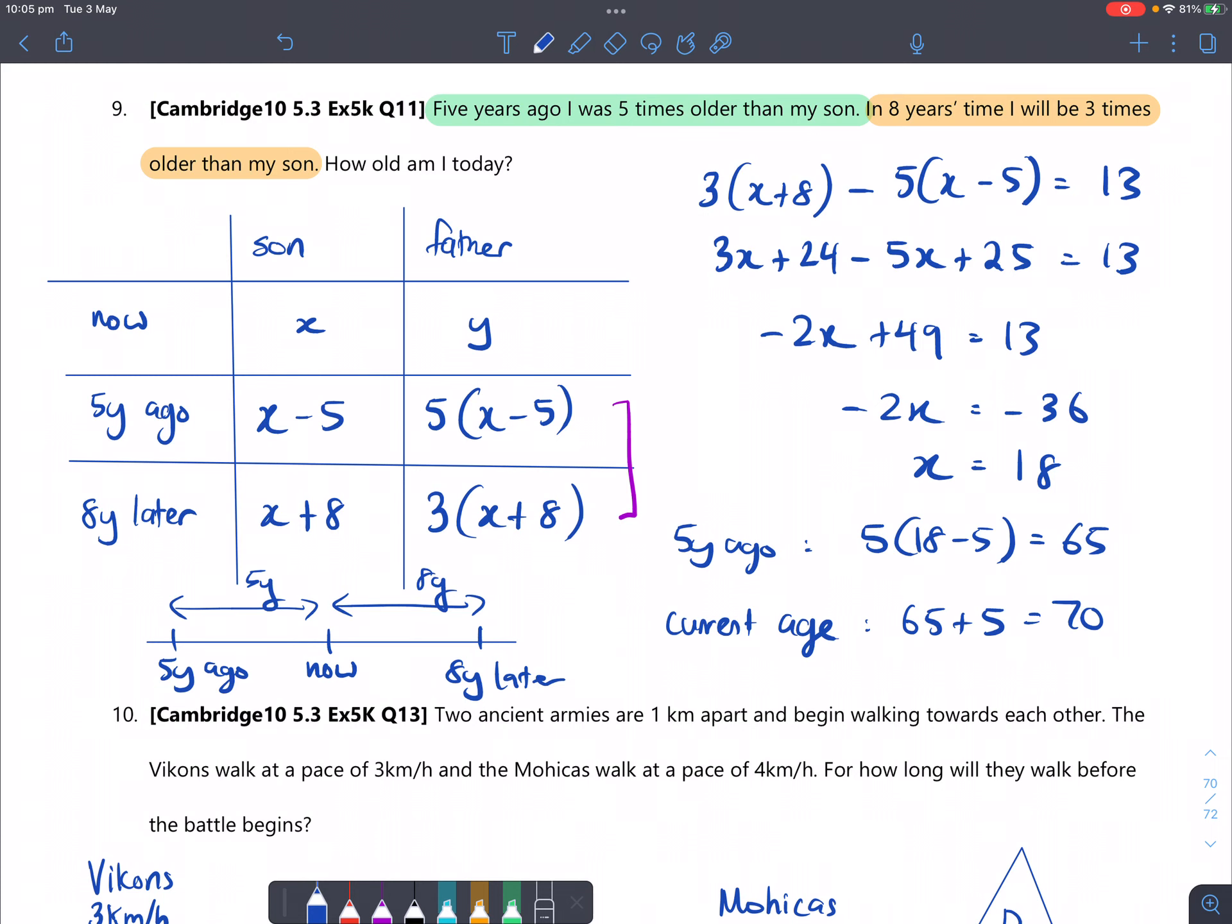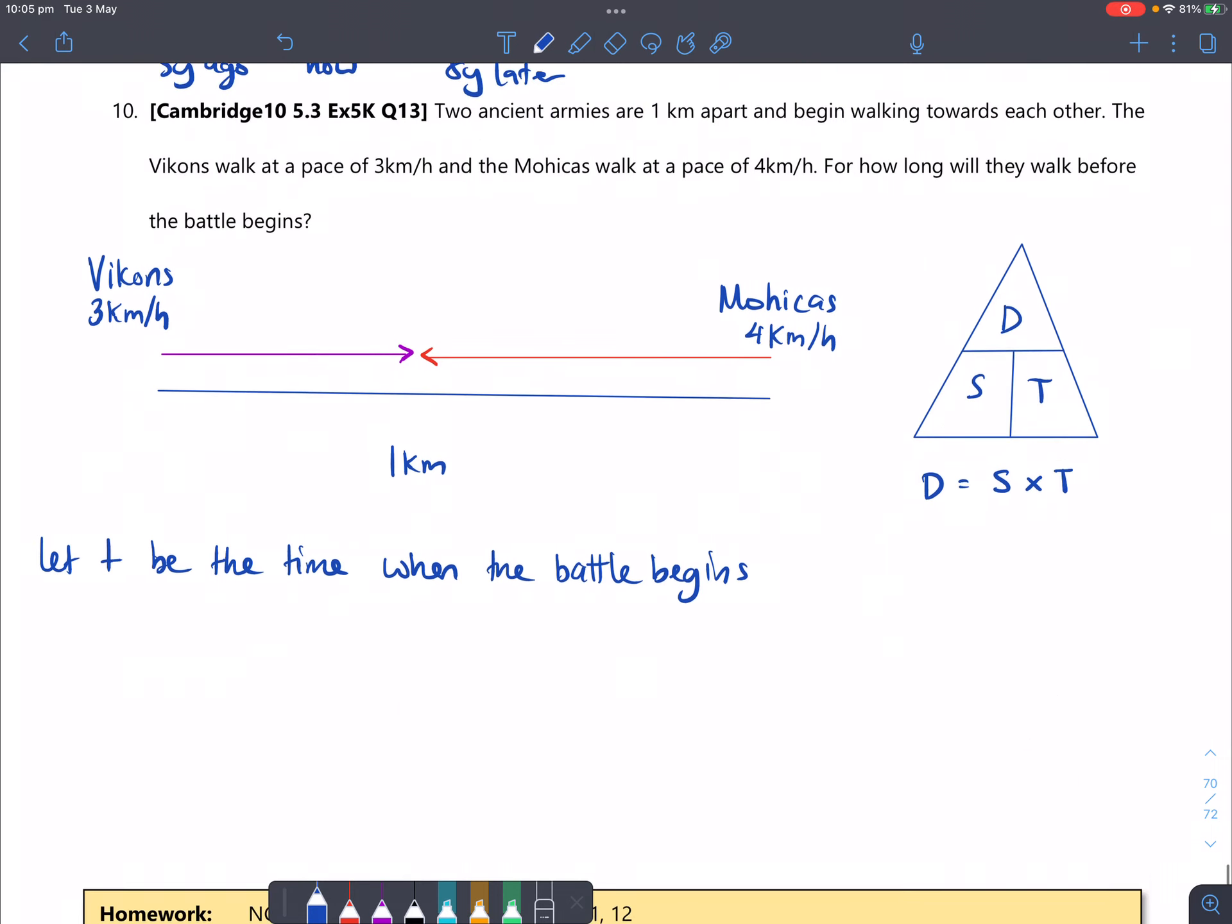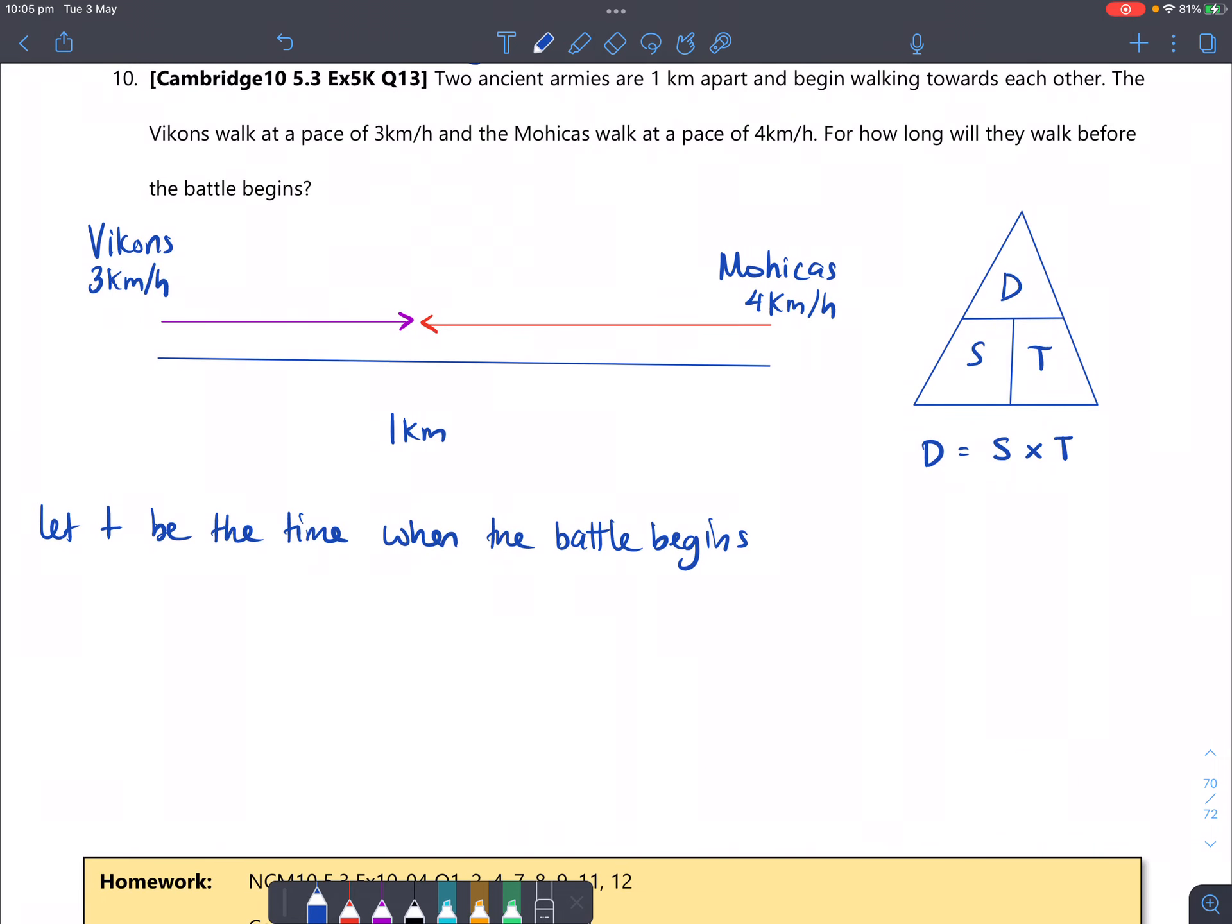Let's go to question 10. Two ancient armies are one kilometer apart and begin walking towards each other. The Vikons walk at a pace of 3 kilometers per hour and the Mohicas walk at a pace of 4 kilometers per hour. For how long will they walk before the battle begins?